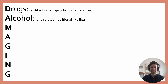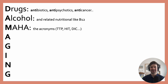A stands for alcohol, as well as related nutritional deficiencies like B12. M is MAHA — microangiopathic hemolytic anemia. Think of the acronyms TTP, HIT, DIC, and HUS.